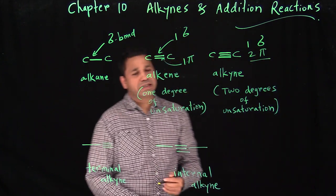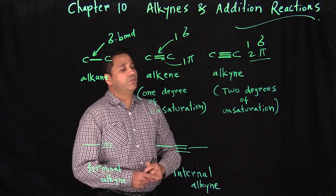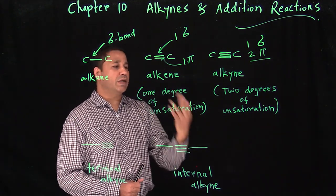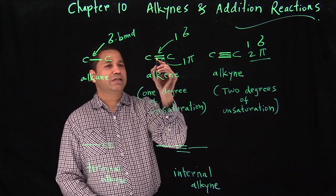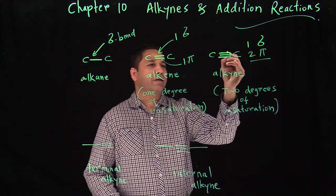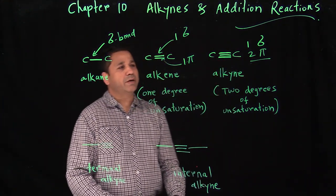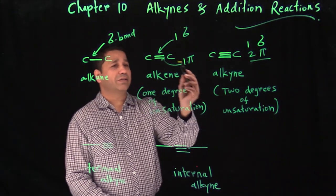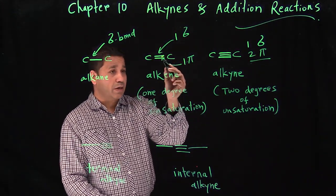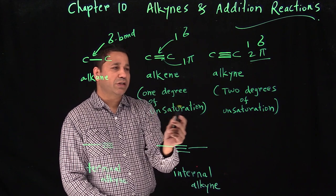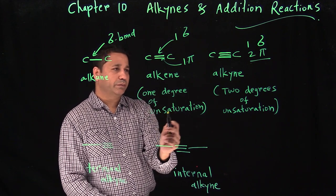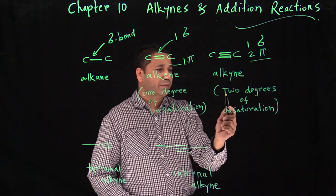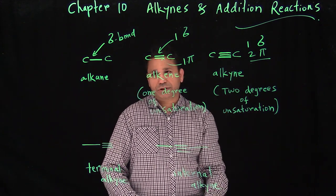How do you know how many sigma and pi bonds you have? The first bond is always sigma and all the multiple bonds are pi bonds. So for a triple bond: one sigma and two pi bonds. Since we have two pi bonds, that means two degrees of unsaturation.